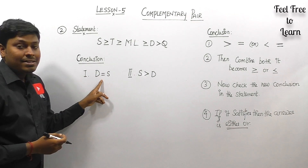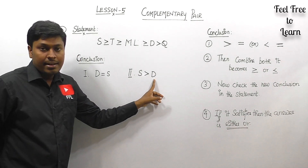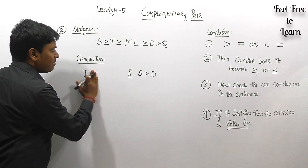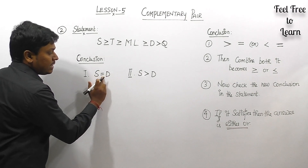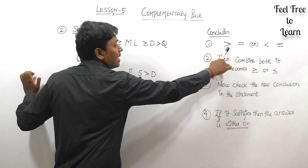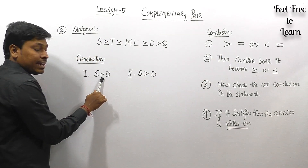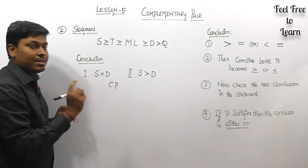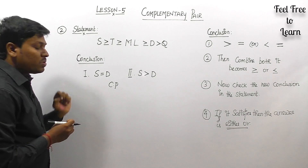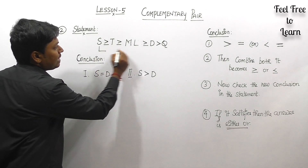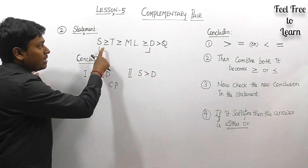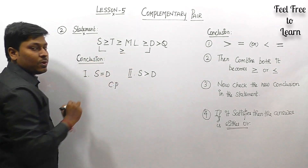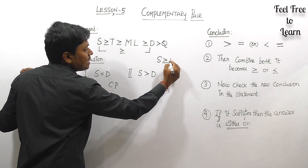By seeing both conclusions, we can say it's a complementary pair: one symbol is greater than and the second is equal to, and both letters are the same. Now check conclusion one separately — S = D. Comparing S and D in the statement, we have multiple symbols: the common ones include both greater than and equal to, so S ≥ D. But conclusion one says only S = D, so conclusion one is false.